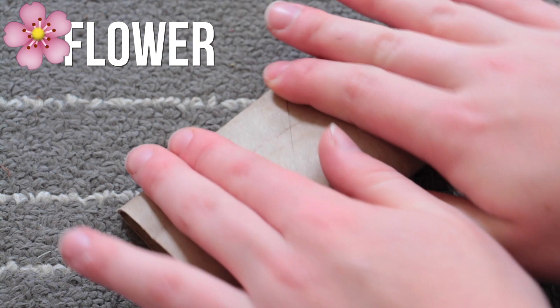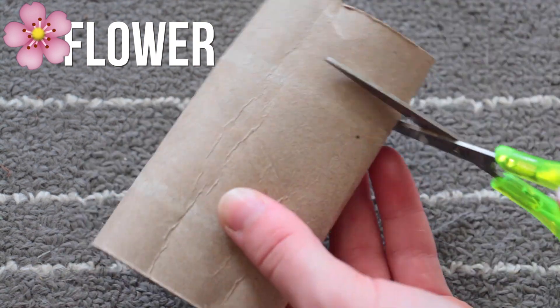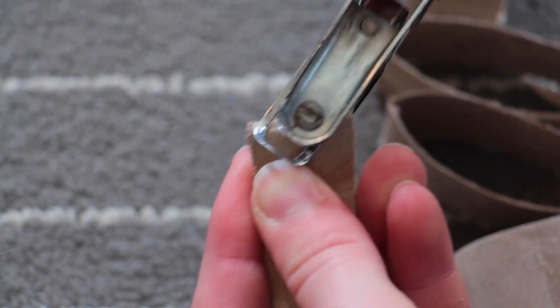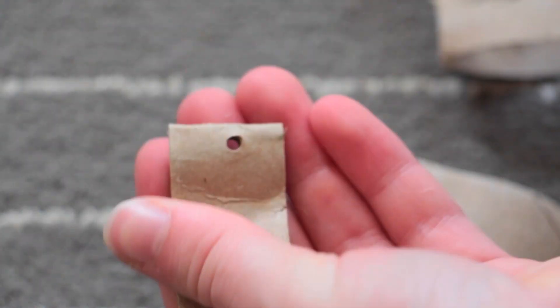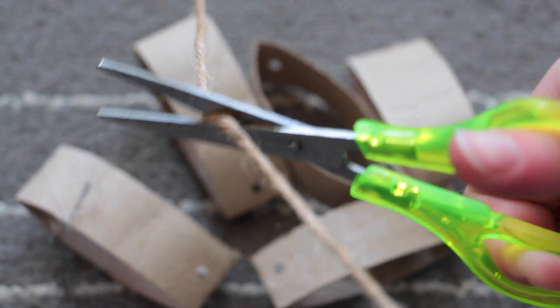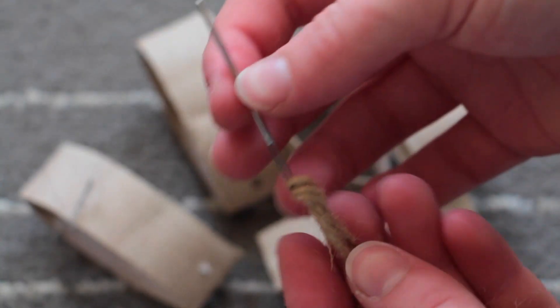Next we are going to be making a flower. So start off by flattening a tube a little bit on each side and then cut it into five strips. Then take a hole punch and put a hole in the bottom of the strip like this.